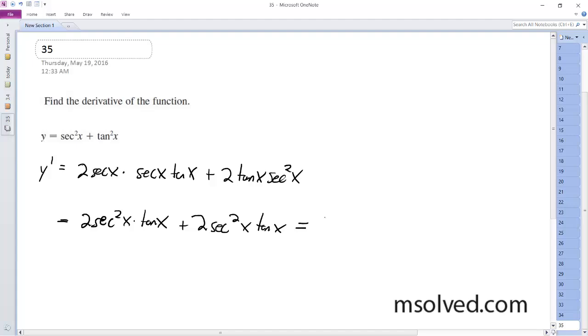is finally equal to, breaking this down through identities, 4 secant squared x tangent x, that's it. Thank you.